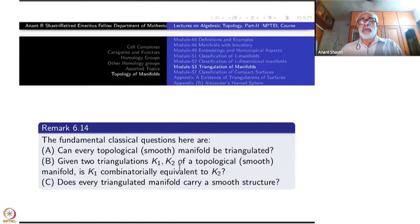Next question: given two triangulations K1 and K2 of a topological manifold, is K1 combinatorially equivalent to K2? By which we mean that there are subdivisions K1 prime of K1 and K2 prime of K2 such that the two subdivisions are isomorphic. Does every triangulated manifold carry a smooth structure? So these are the few standard questions.